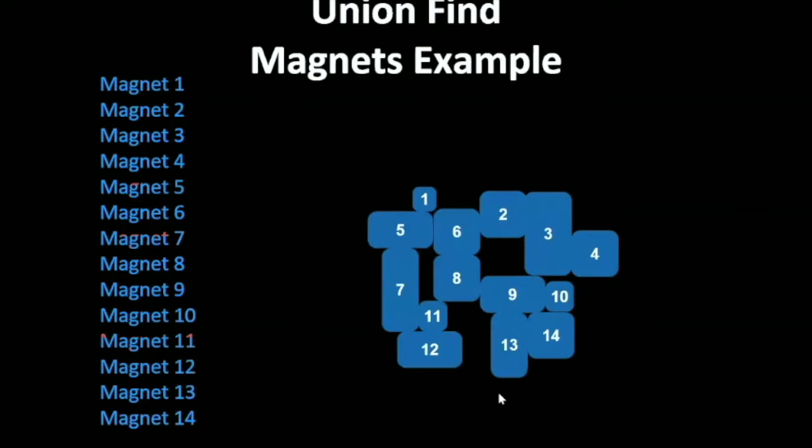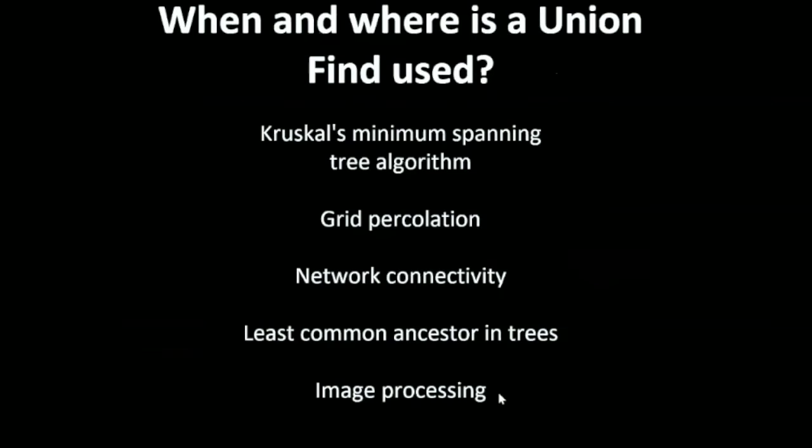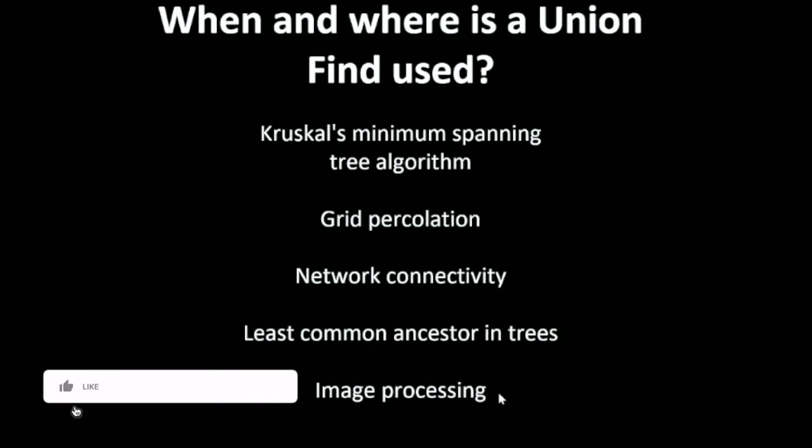This is just to give you an intuition. Union Find is used, the major application you will see of the Union Find is in the Kruskal minimum spanning tree algorithm. It's mostly used in graph based algorithms like network connectivity, least common ancestor in trees. Also in image processing and machine learning, we use Union Find data structure.